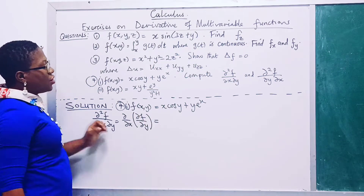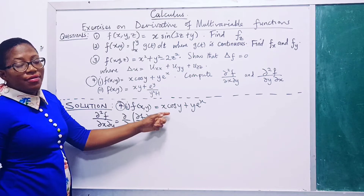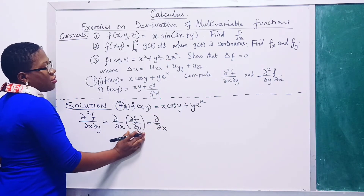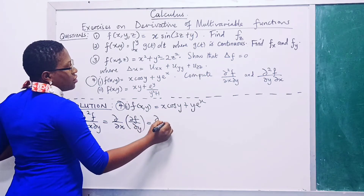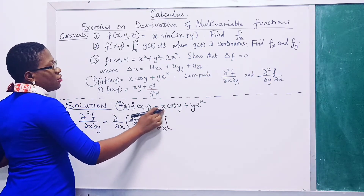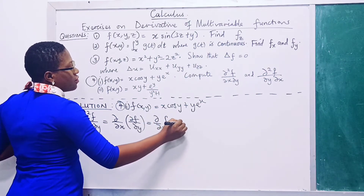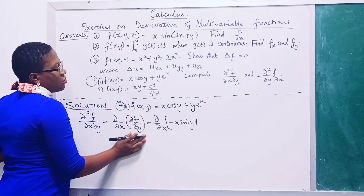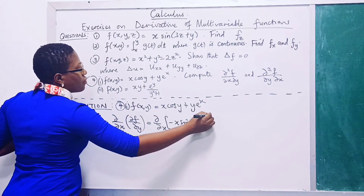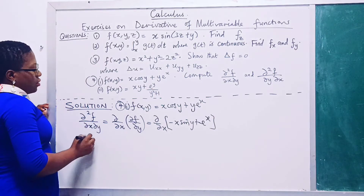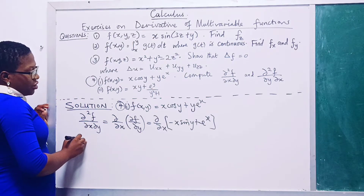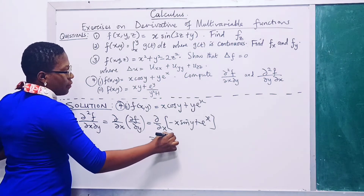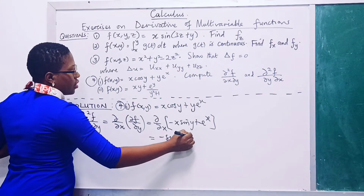We differentiate f with respect to y first: treating x as a constant, we get minus x·sin(y) plus eˣ. Then we differentiate with respect to x: we get minus sin(y) plus eˣ.